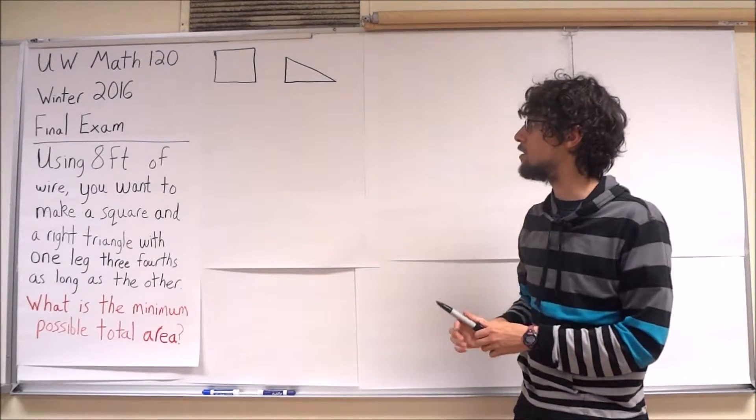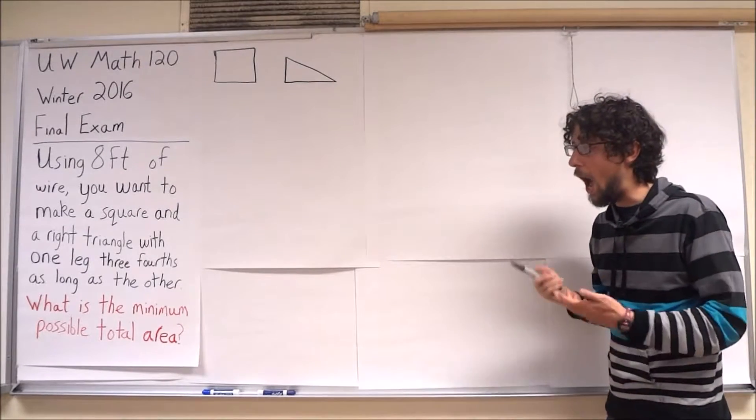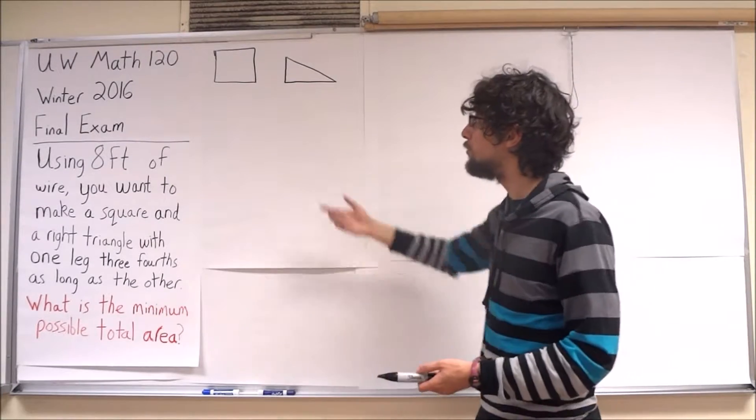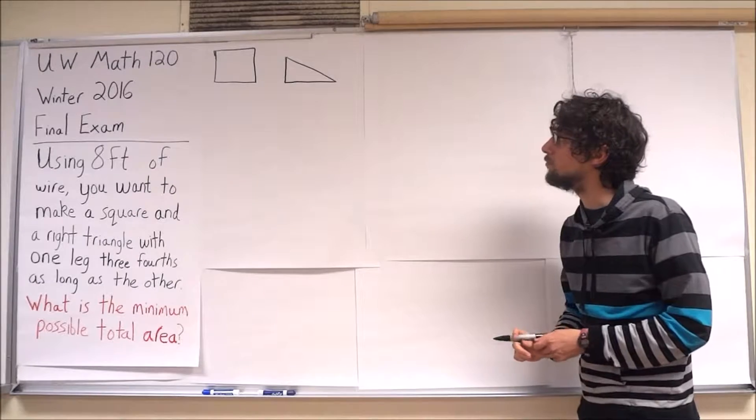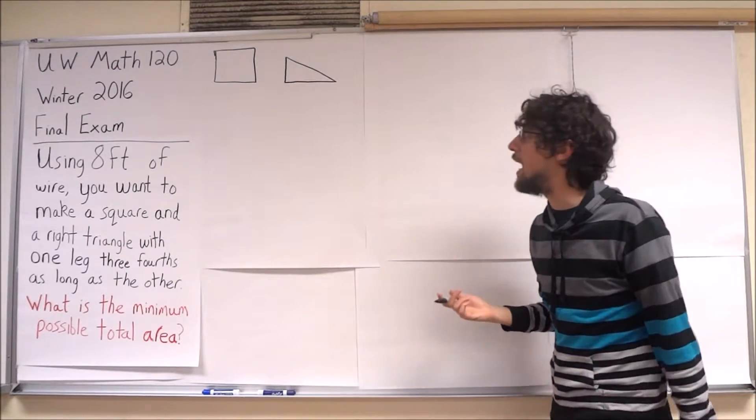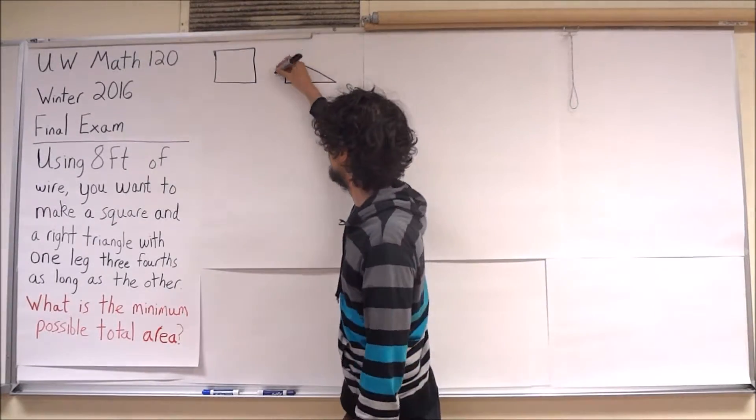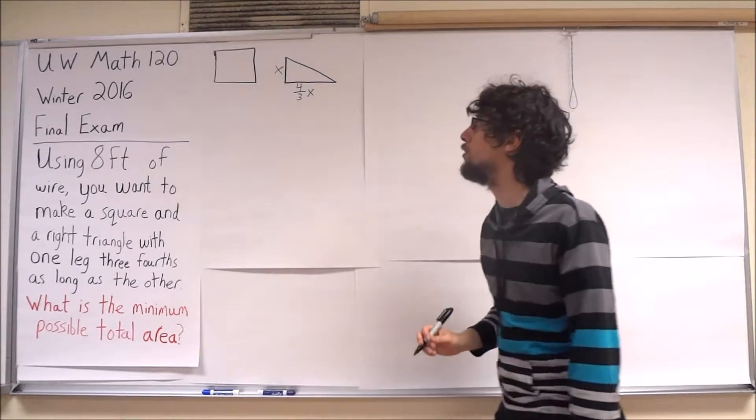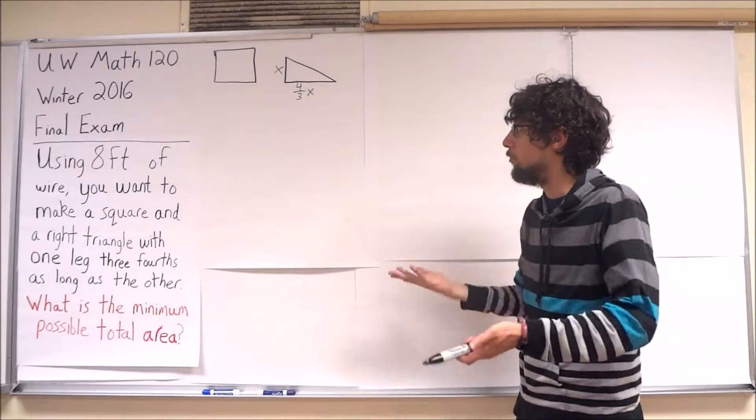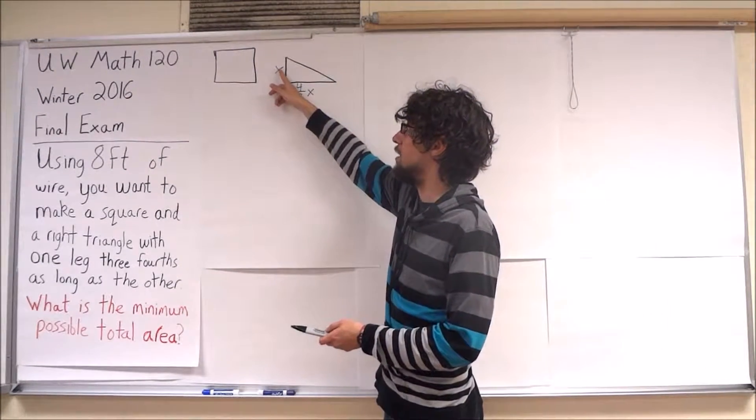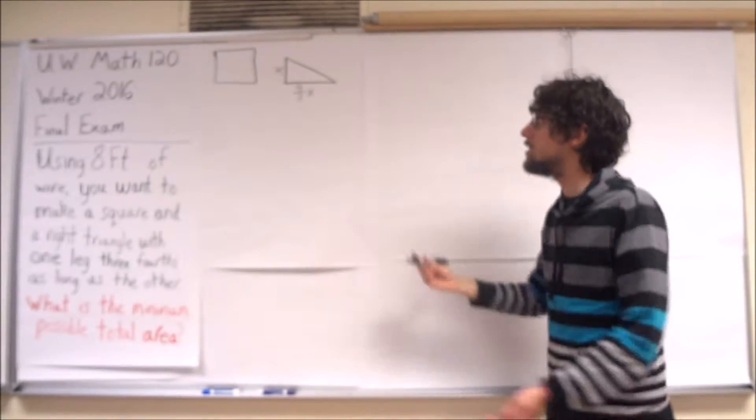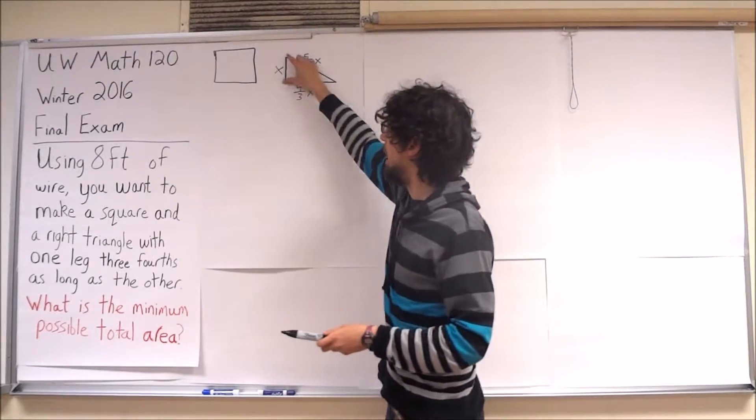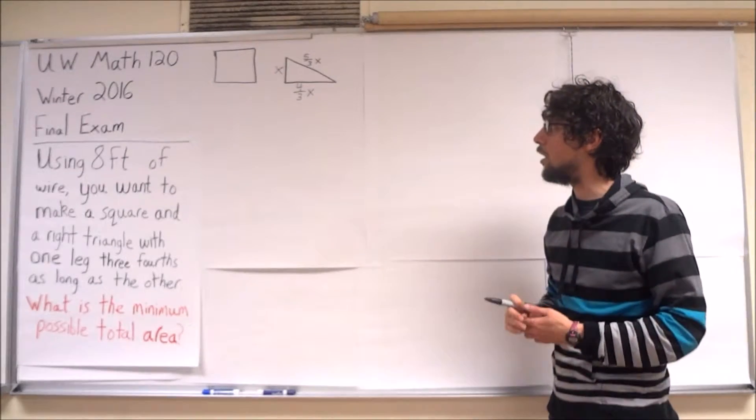So, I'm going to write a function that models the total area as a function of this particular length here. Let's say that this particular length here is x. If this is x, then this is 4/3x. This is 4/3, because now I have that this is exactly 3/4 the length of this. And similarly, this is 5/3x. So, this choice of x dictates the entire perimeter of this right triangle.